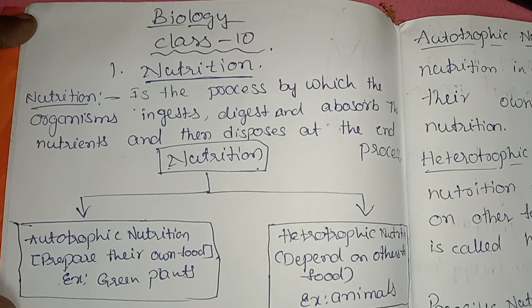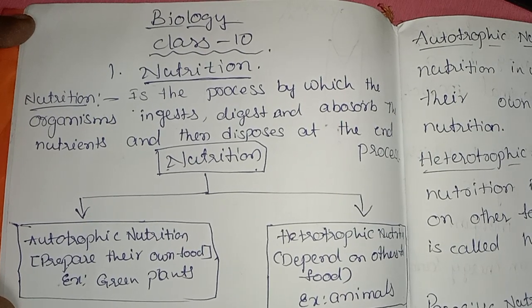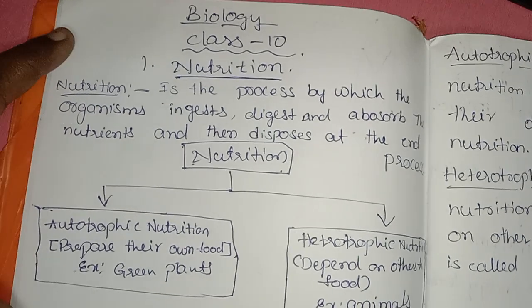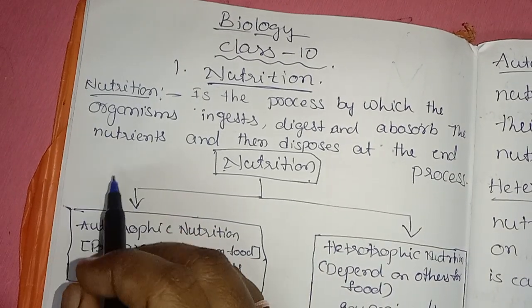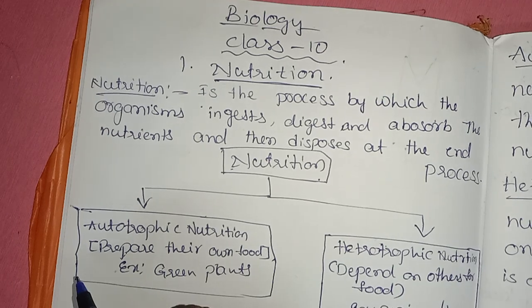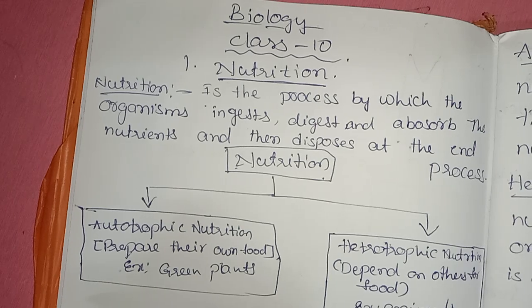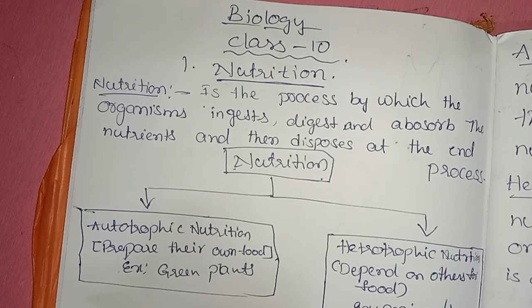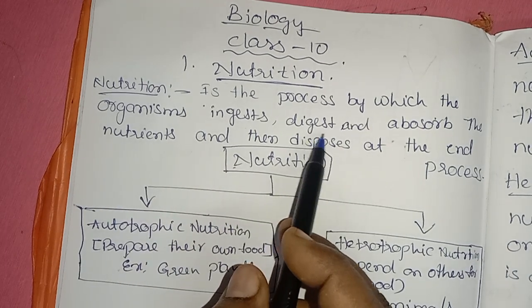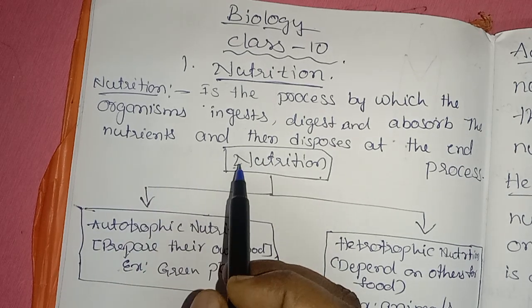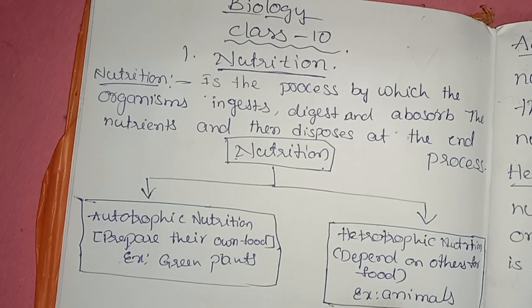Hello students, today we are going to discuss nutrition — Biology Class 10, first lesson. Nutrition is a process by which organisms ingest (take food), digest the food, absorb the nutrients, and then dispose of the waste at the end of the process.